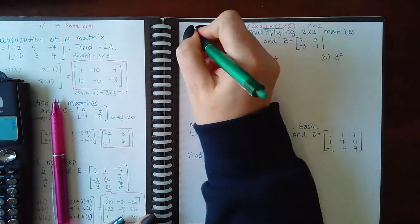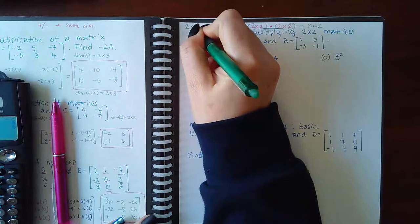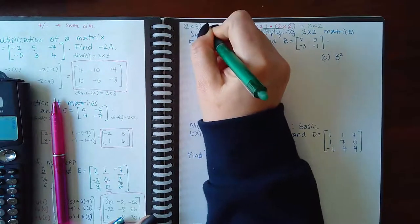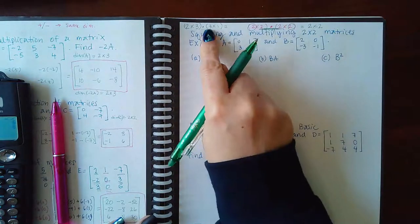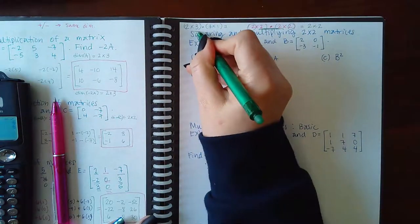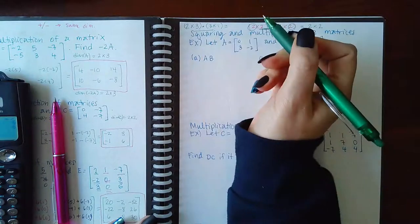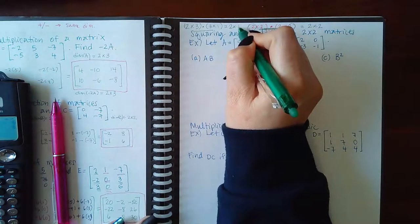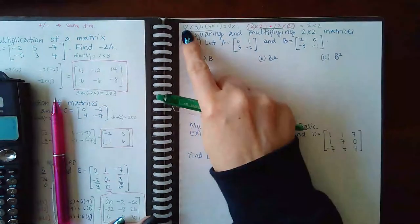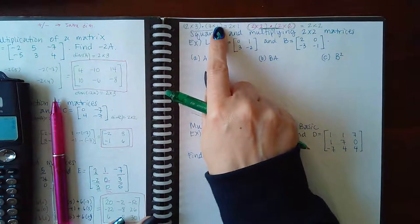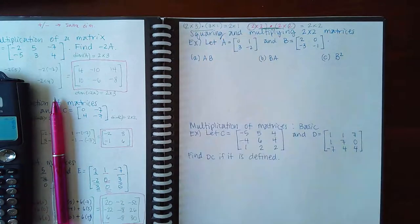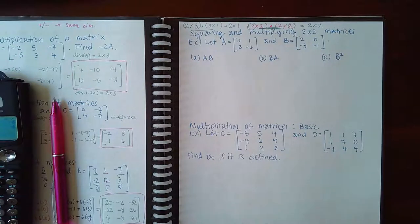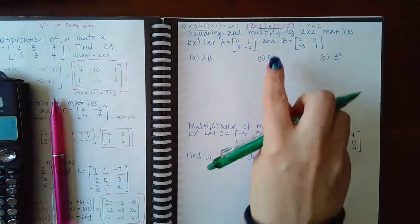For example, a two by three matrix multiplied by a three by one matrix is possible because the inner dimensions both equal three. The resulting product will be a two by one matrix — the outer dimensions give you the rows and columns of the answer.